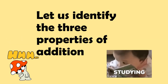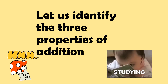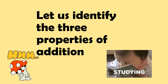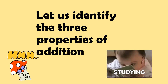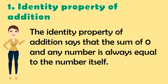Now, let us identify the three properties of addition. First, identity property of addition. The identity property of addition says that the sum of zero and any number is always equal to the number itself.